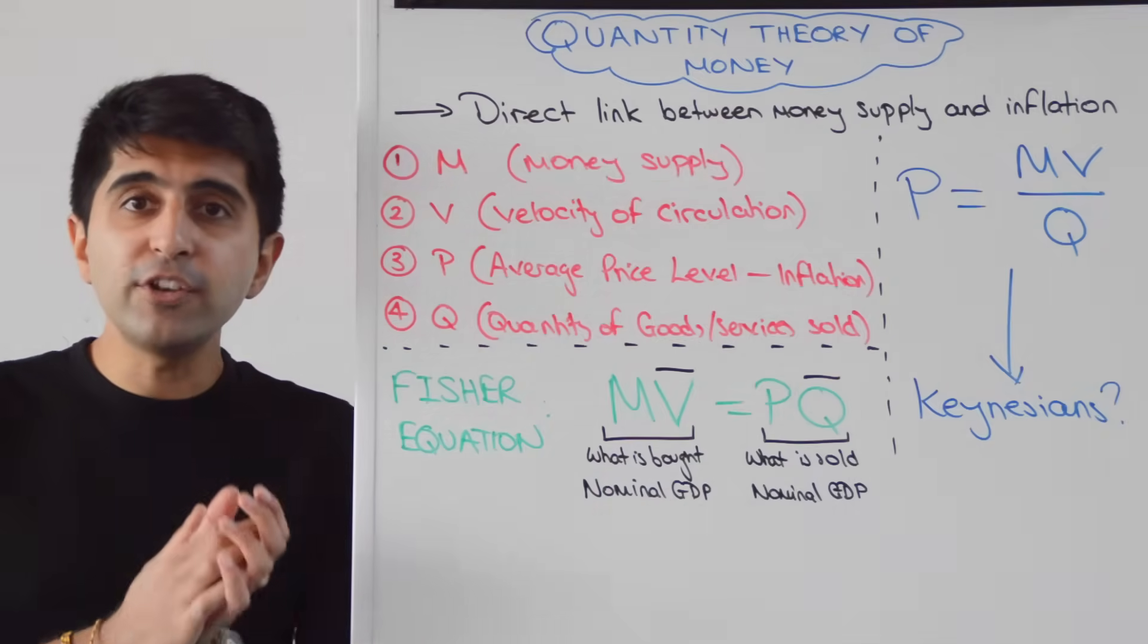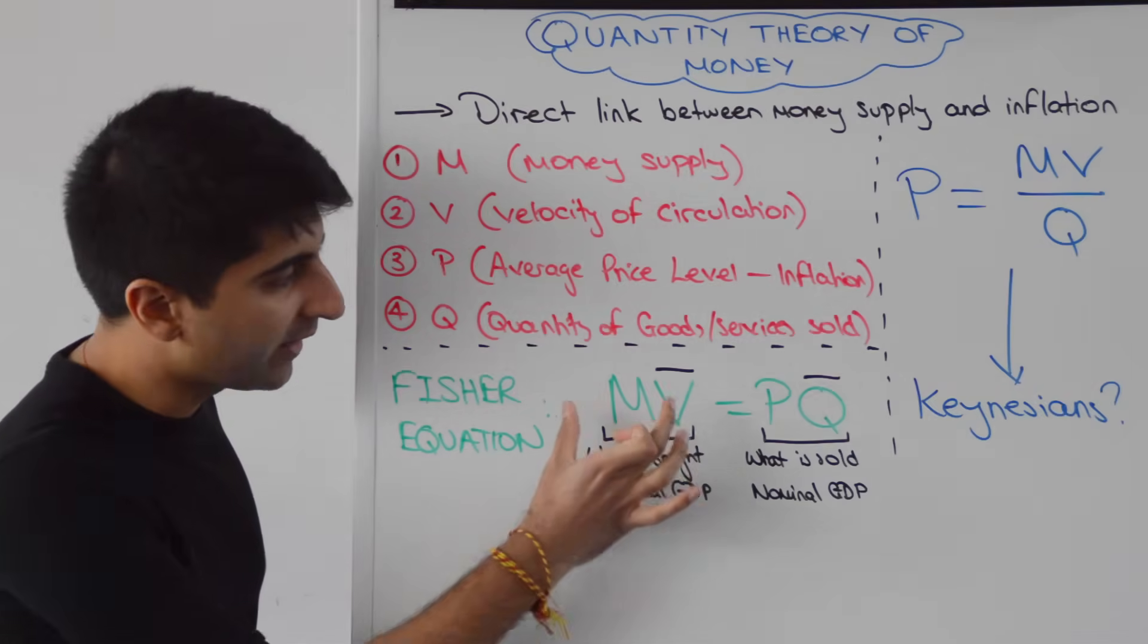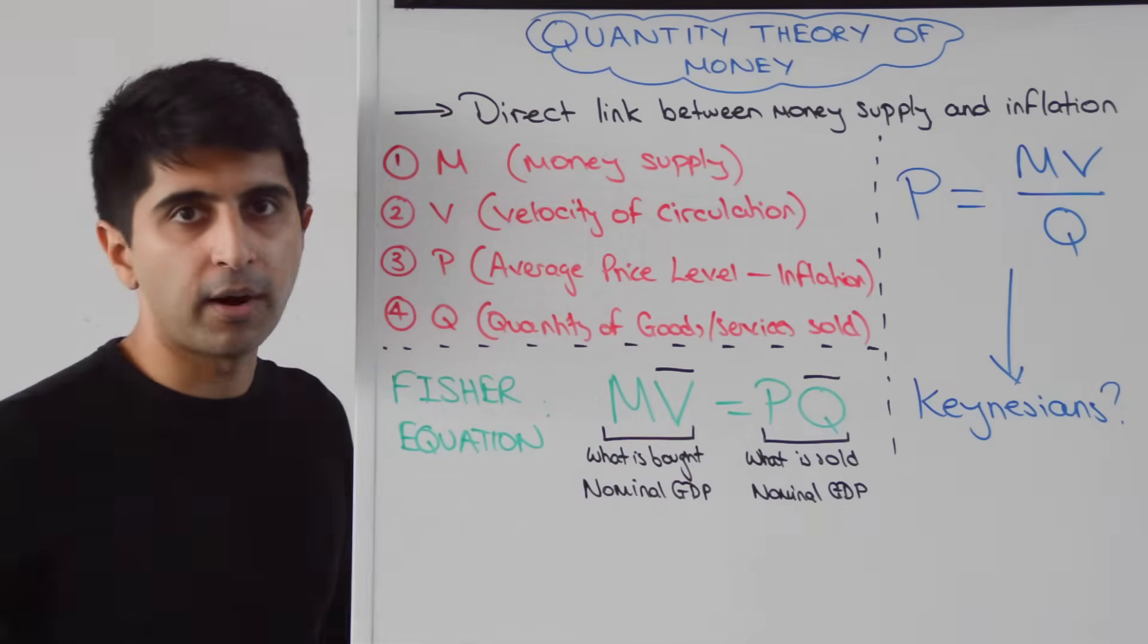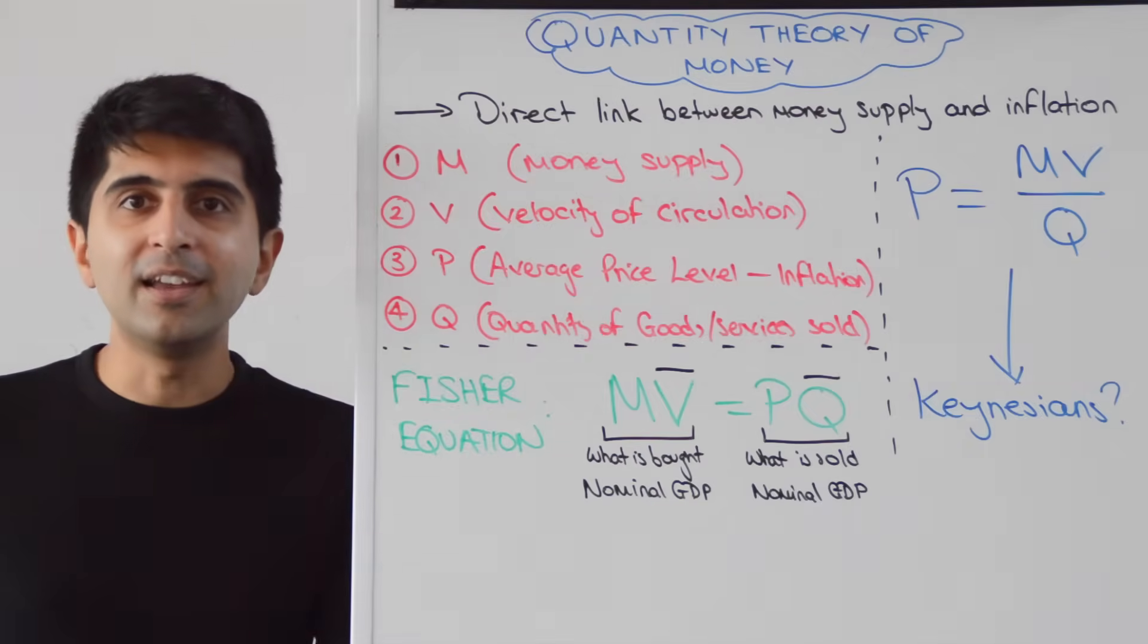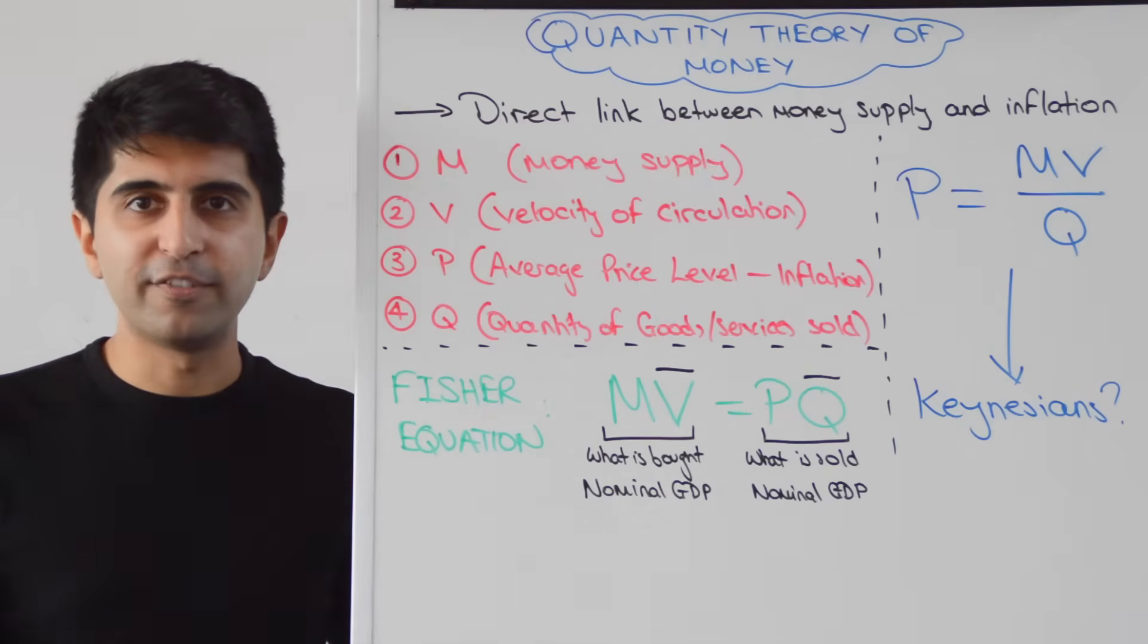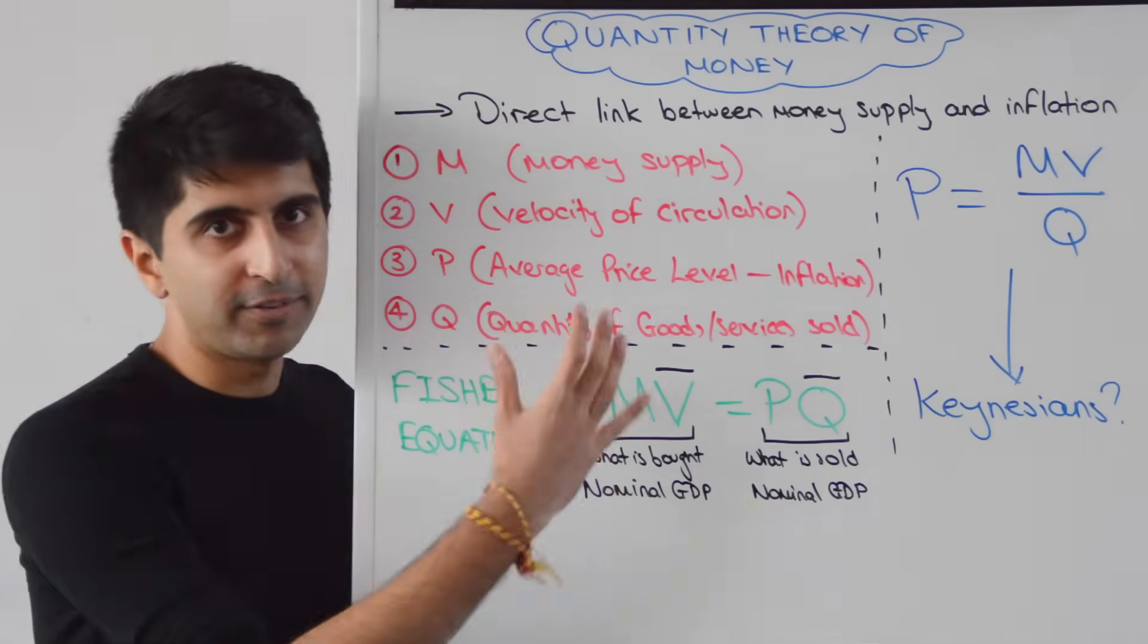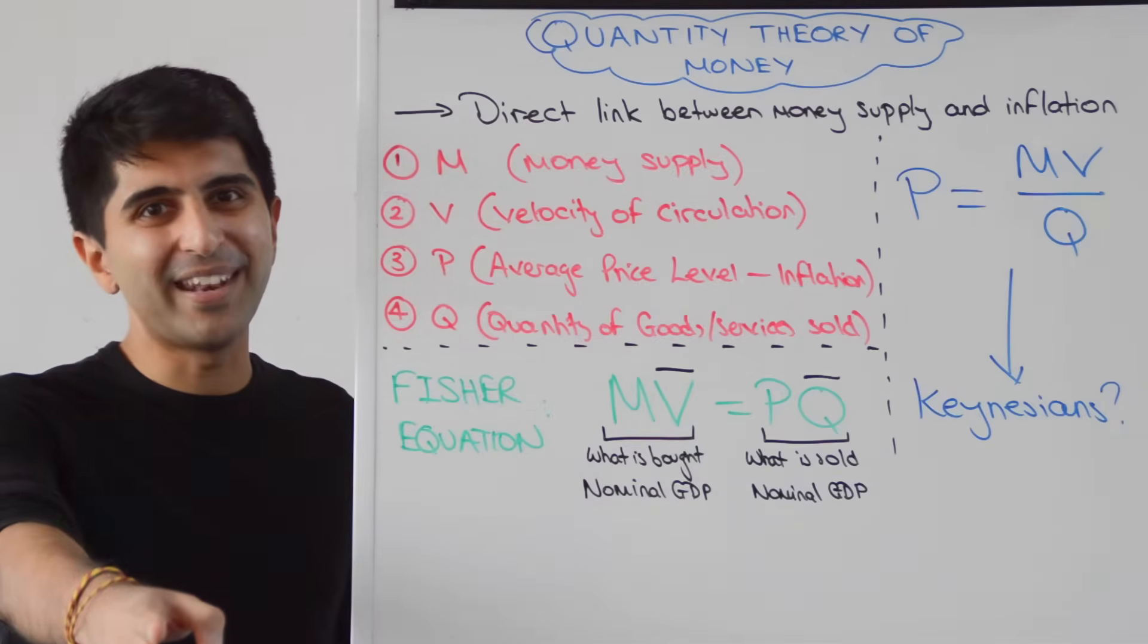Remember, this is an identity. So if ever you need to make calculations using the quantity theory of money, just always make sure that the left side of the equation equals the right side. But now you've got a deeper understanding of why monetarists will say, like Milton Friedman, that inflation is always and everywhere a monetary phenomenon. There is hot debate about it as well. Very interesting stuff. Thank you so much for watching. I'll see you all in the next video.